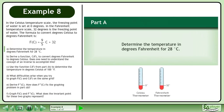In the Celsius temperature scale, the freezing point of water is set at 0 degrees. In the Fahrenheit temperature scale, 32 degrees is the freezing point of water. The formula to convert degrees Celsius to degrees Fahrenheit is F equals 9 over 5C plus 32.